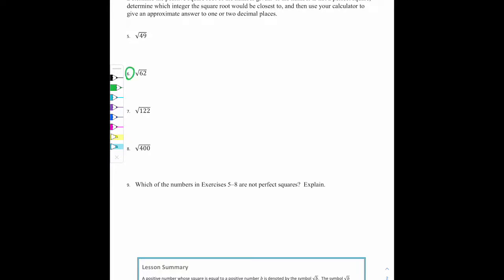We'll do number 6 together. So first, let's talk about how we will say which integer it is going to be closest to. And you do not need a calculator for this. We want to think to ourselves, what two perfect squares is 62 between? So I know that just below 62, as far as the next perfect square that's smaller, would be 49. 62 would be sandwiched in the middle. And then the next perfect square would be 64.